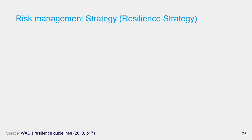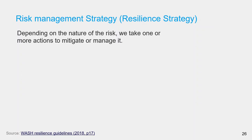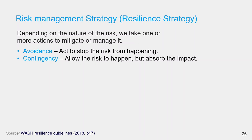How can risk analysis inform the resilience strategy? Depending on the nature of the risk, we can take one or more actions to mitigate or manage it, and this set of actions will inform our resilience strategy. Some examples for actions: avoidance — act to stop the risk from happening; for example, if a community is going to get flooded, we create an embankment between the community and the river so that flooding will not impact the community. Contingency — allow the risk to happen but absorb the impact; for example, if the impact of flooding is not catastrophic, we let the area flood once in a while but have locations for effective evacuation.